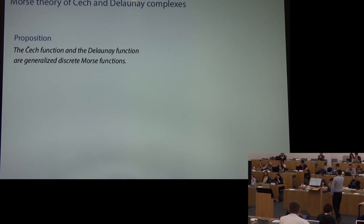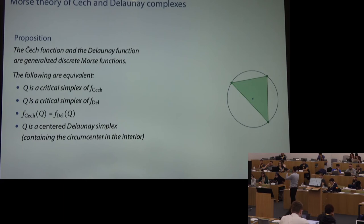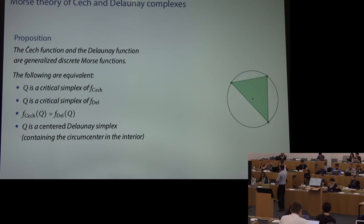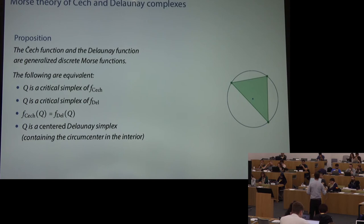The Čech function and the Delaunay function are generalized discrete Morse functions. Moreover, a critical simplex of the Čech function exists if and only if there's a critical simplex of the Delaunay function with the same function value. The critical simplices are precisely those Delaunay simplices whose circumsphere has its center inside that simplex — those are the centered Delaunay simplices. For all non-critical simplices, the Delaunay function value is strictly greater than the Čech function value.